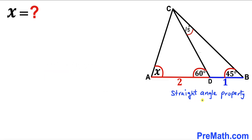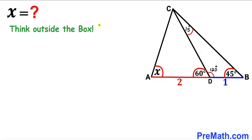Now let's recall the straight angle property. This whole angle is a straight angle equal to 180 degrees. Since we know this angle is 60 degrees, the remaining angle must be 120 degrees. Now we are going to think outside the box and draw some auxiliary lines.